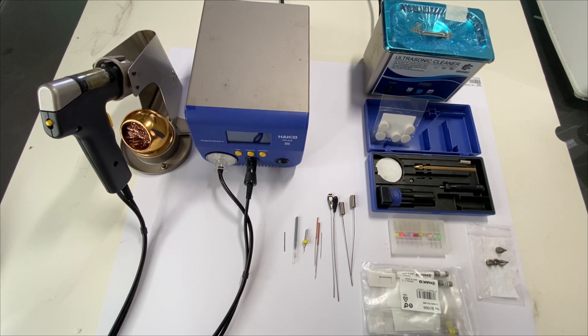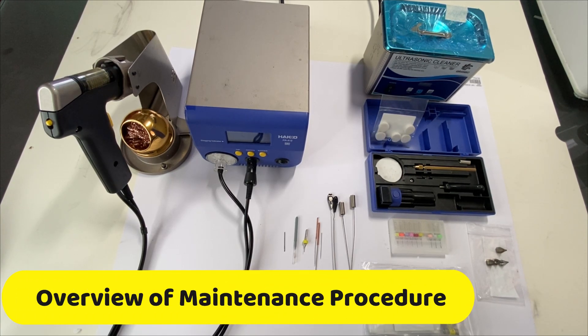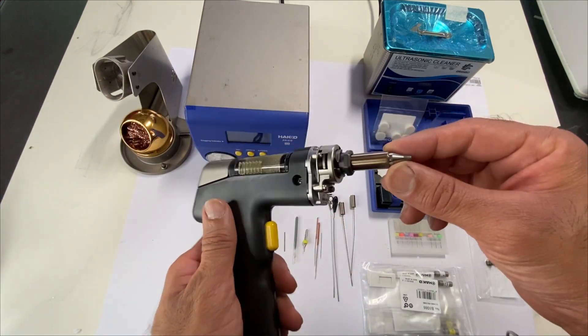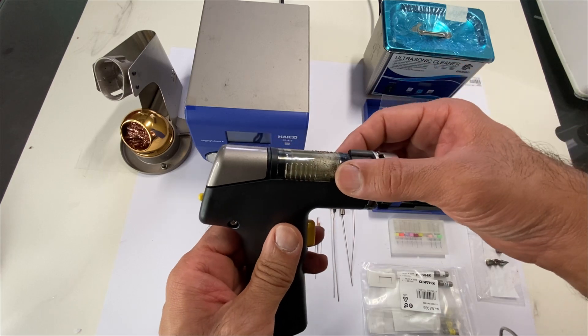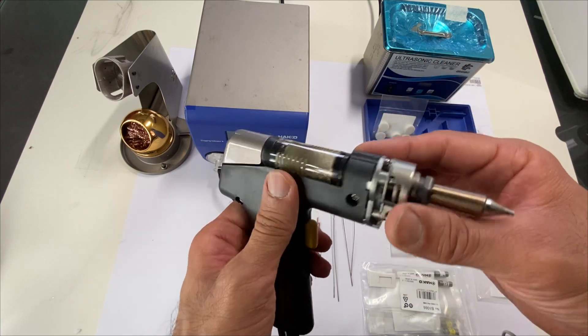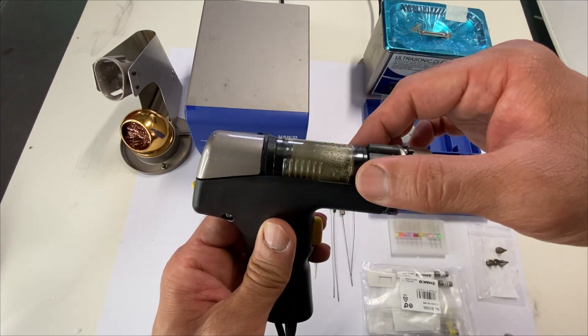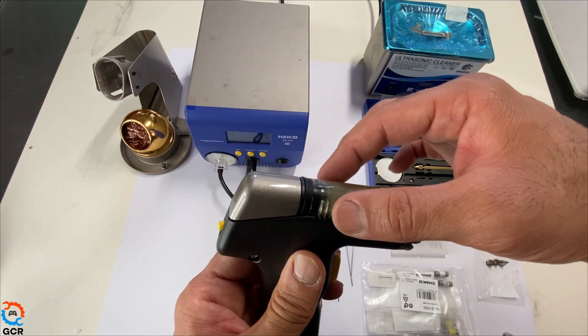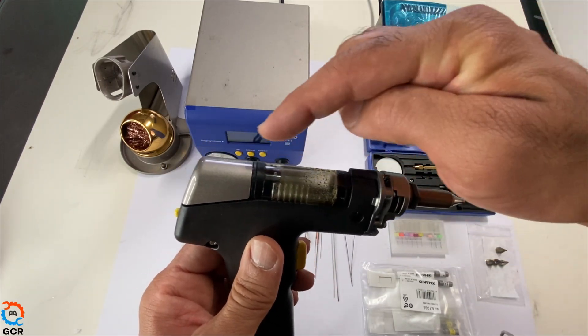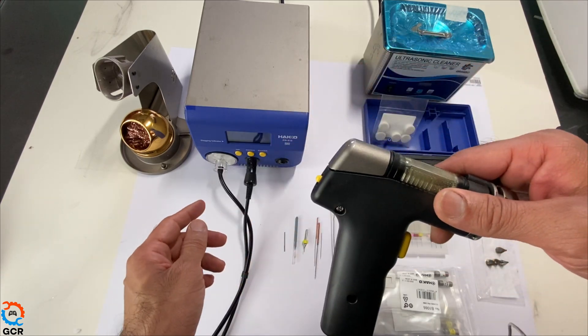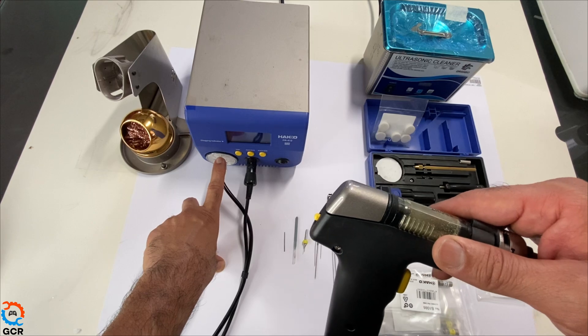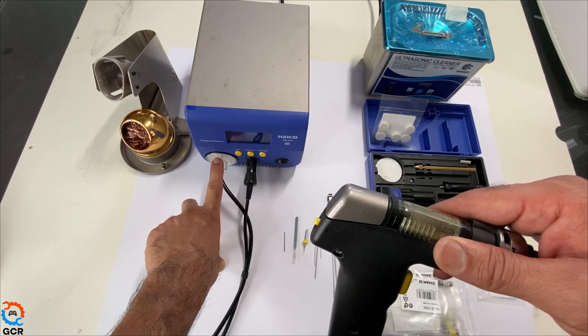In this video I'll be showing you how to perform maintenance on your Hako FR410 desoldering station. If you do a lot of desoldering, over time your filter pipe will be clogged up with a lot of flux and solder residue. We'll be cleaning all this up and replacing the filter assemblies. You can do a visual check on the filter on your station and see if that needs changing.